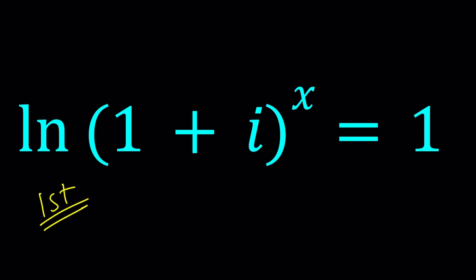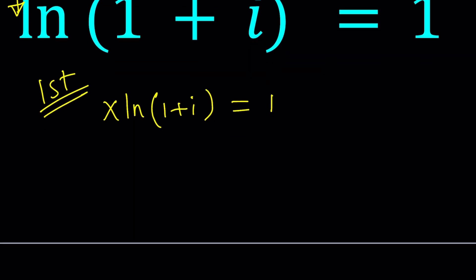So for my first method, I'll do what is very common. When we have a power like this, we can use the properties of logs and bring it to the front. That's going to give us x·ln(1+i) = 1. And I'm going to divide both sides by ln(1+i). And that's going to give me the answer.